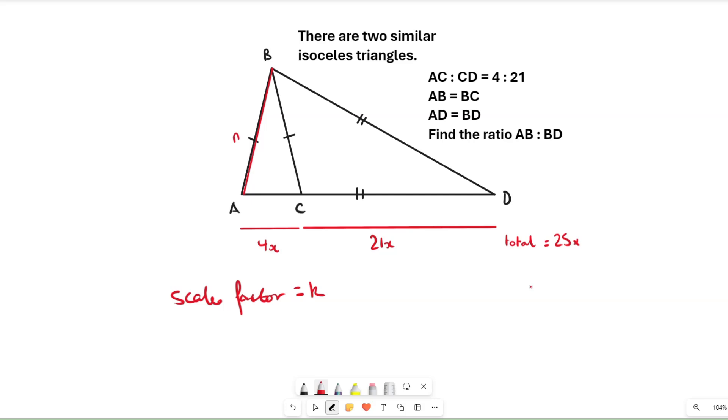We've got 4 and we're going to multiply it by our scale factor k, and that will give us this baseline of the small one. It should give us the baseline of the big one.